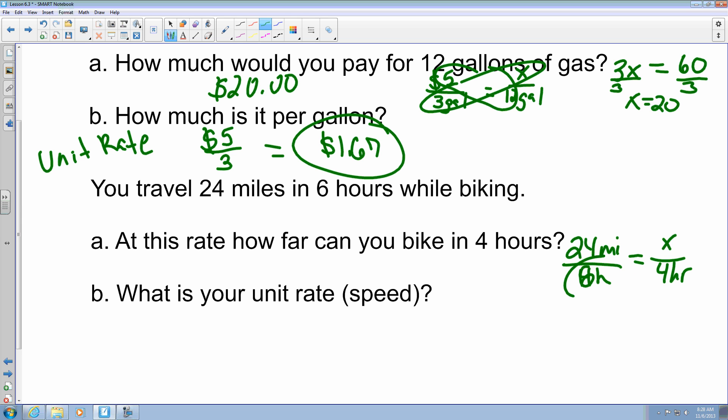Again, same thing applies. Cross multiply. So, I got 6x, and it equals 24 times 4, which gives you 96. Divide both sides by 6, which gives you x, which is going to give you 16 miles.